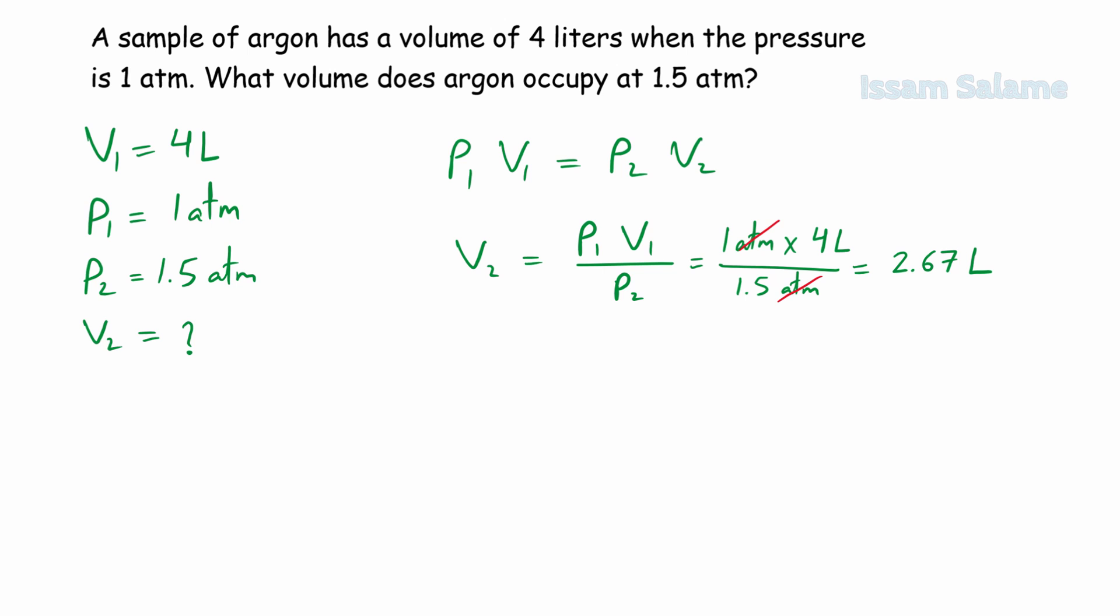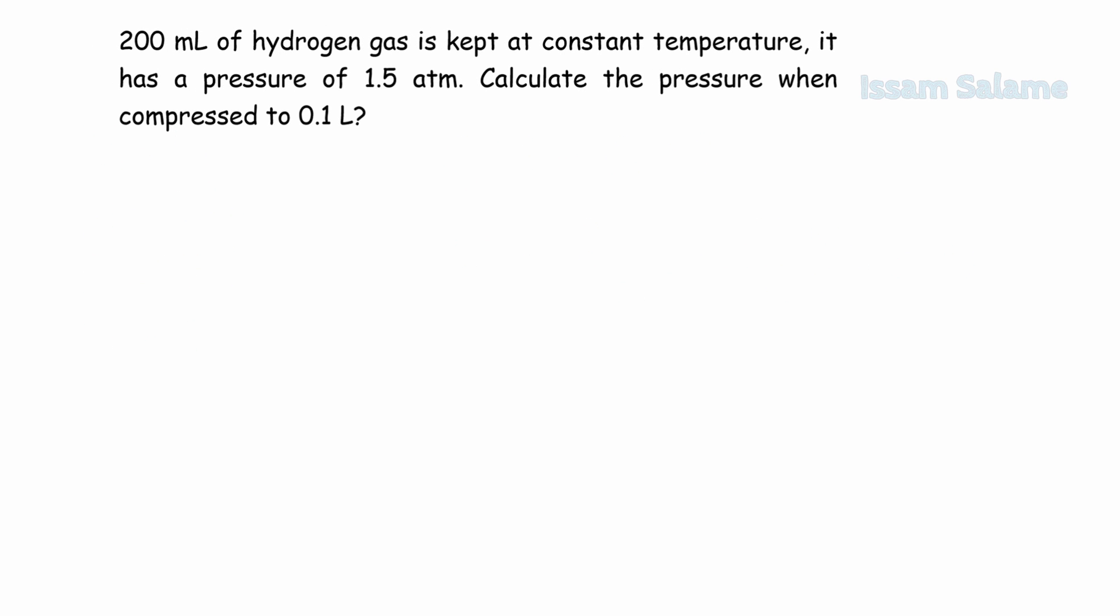Let's have another exercise about Boyle's Law. 200 milliliters of hydrogen gas is kept at constant temperature. It has a pressure of 1.5 atmosphere. Calculate the pressure when compressed to 0.1 liters.